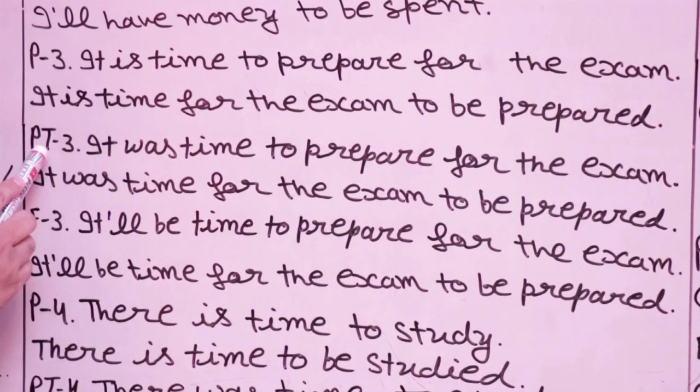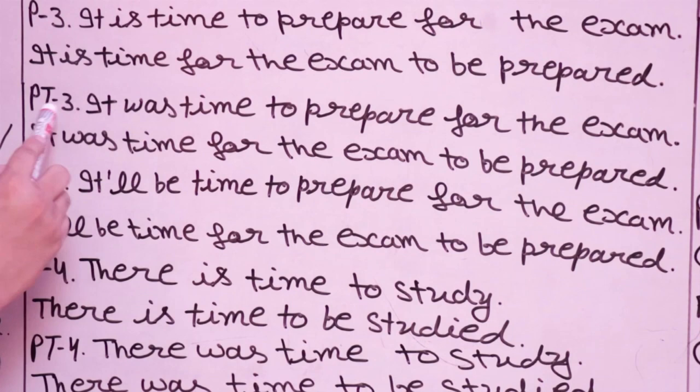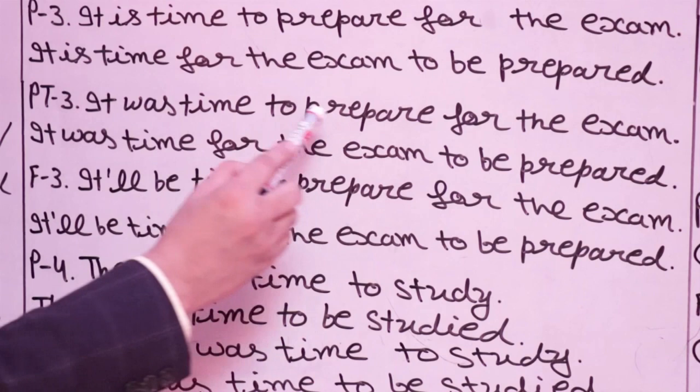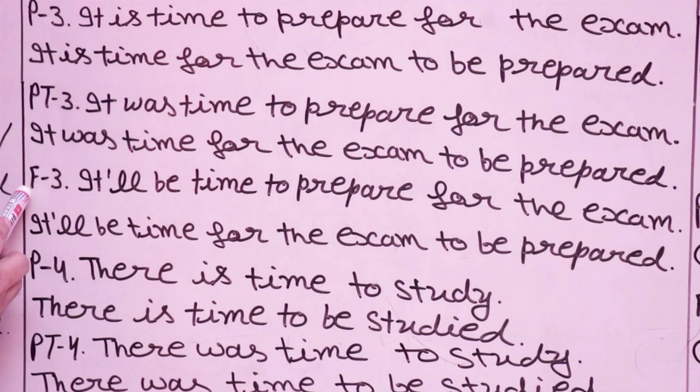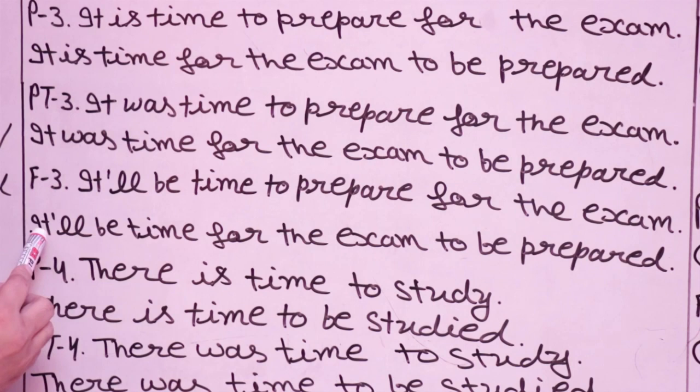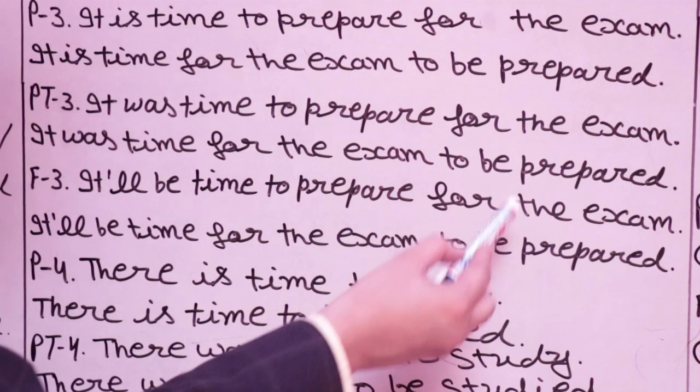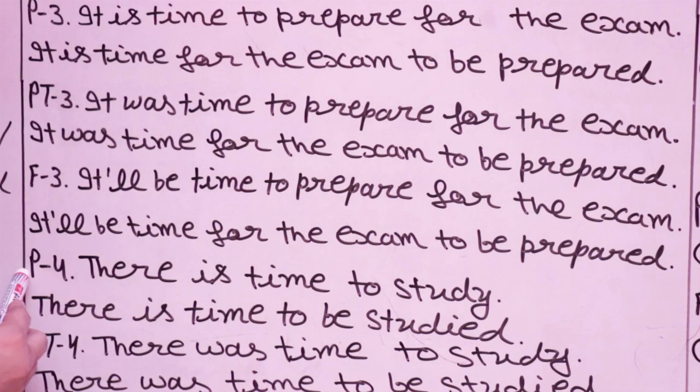PT3: 'It was time to prepare for the exam' becomes 'It was time for the exam to be prepared.' F3: 'It will be time to prepare for the exam' becomes 'It will be time for the exam to be prepared.' All give the same meaning.